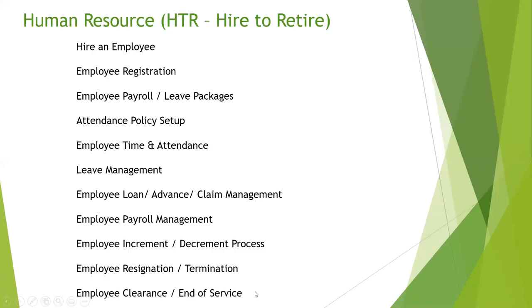Once the employee has resigned or been terminated, the final step for HR is employee clearance — whatever his end-of-service benefits or pending salaries are will be cleared, transferred to his bank account, and clearance certificates will be handed over to him. This is how the human resource department works through the HR module in an ERP, from hiring till end of service or till an employee retires.